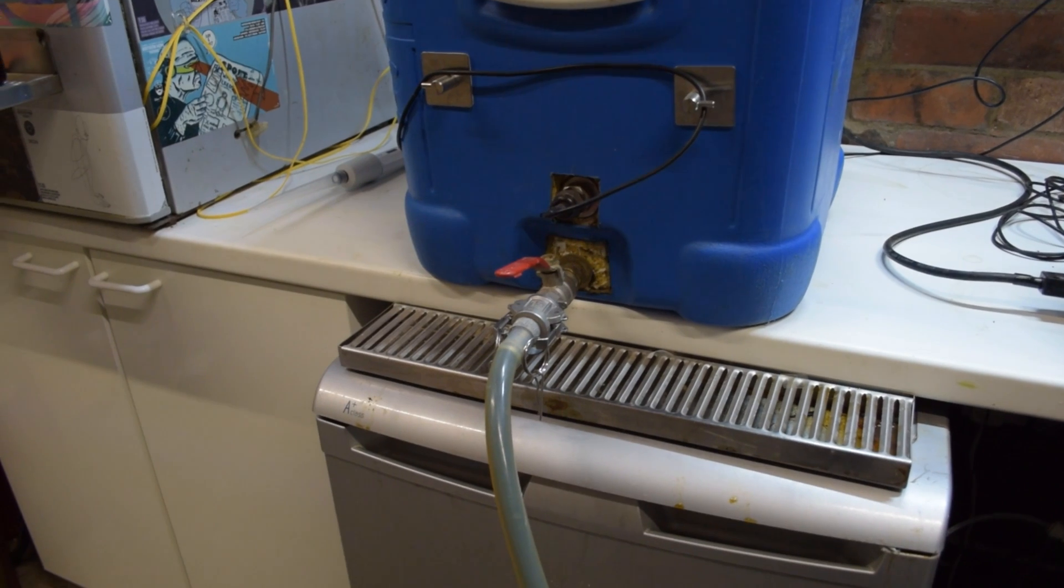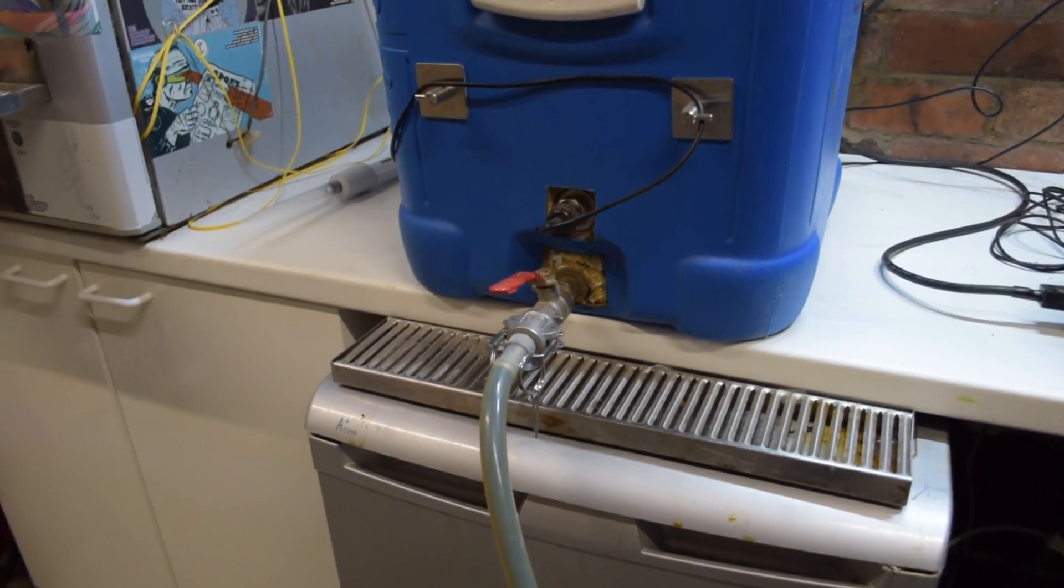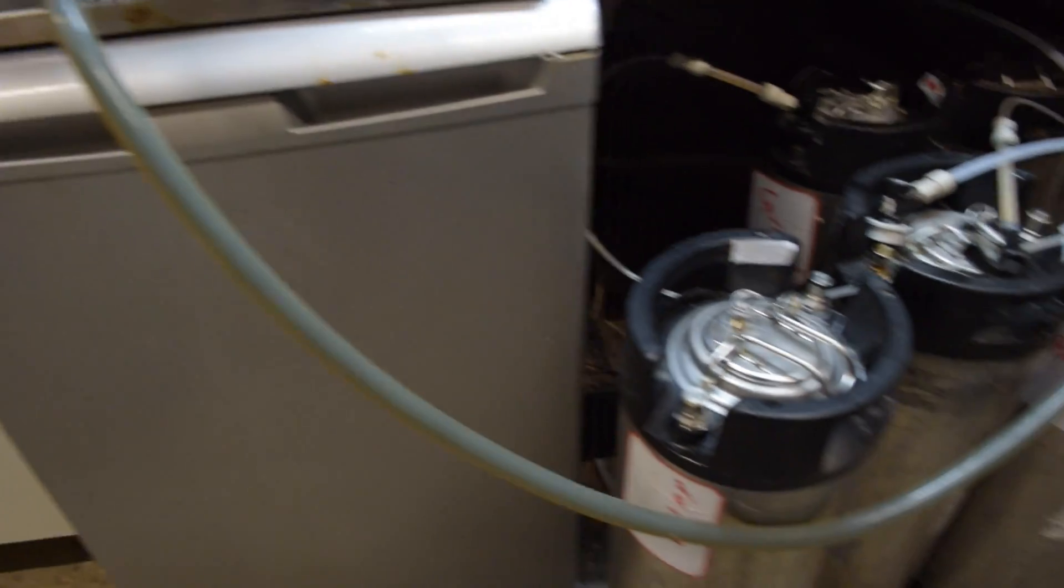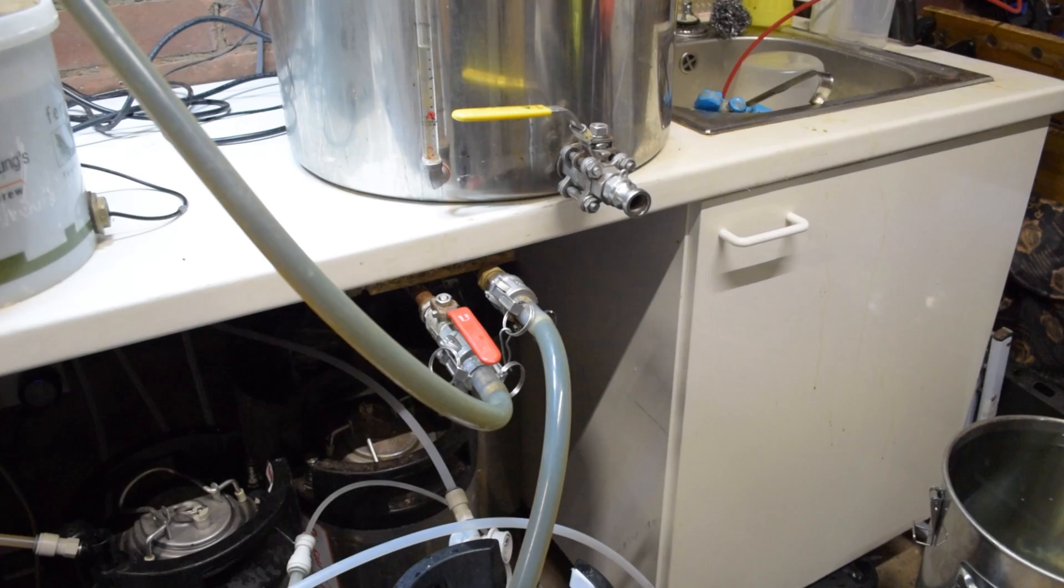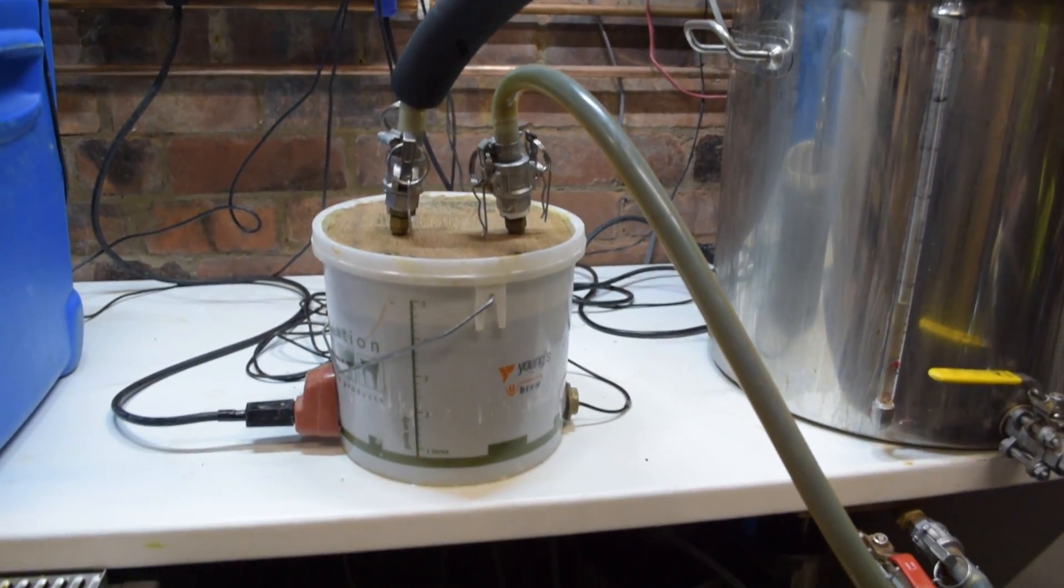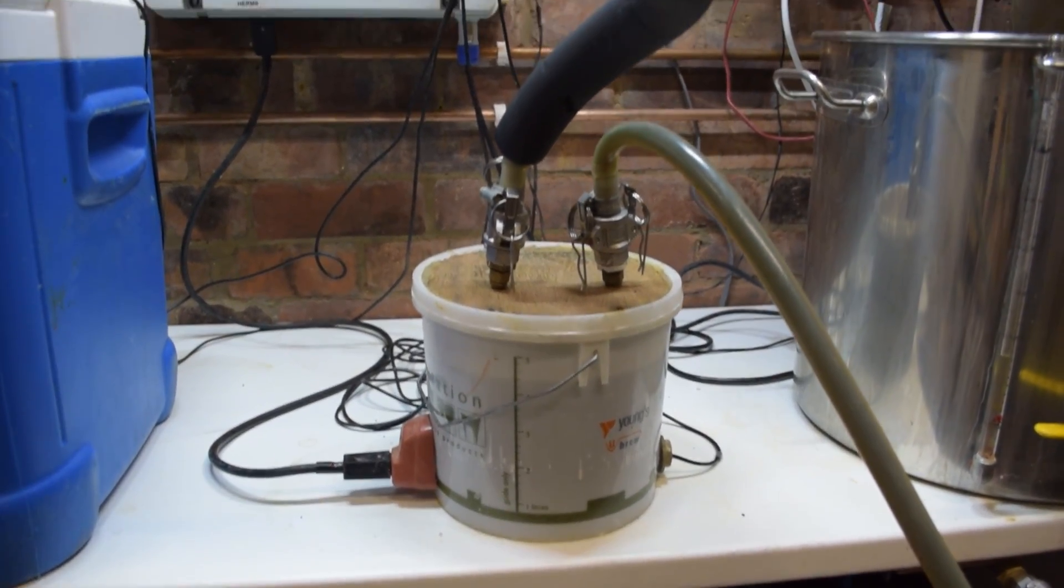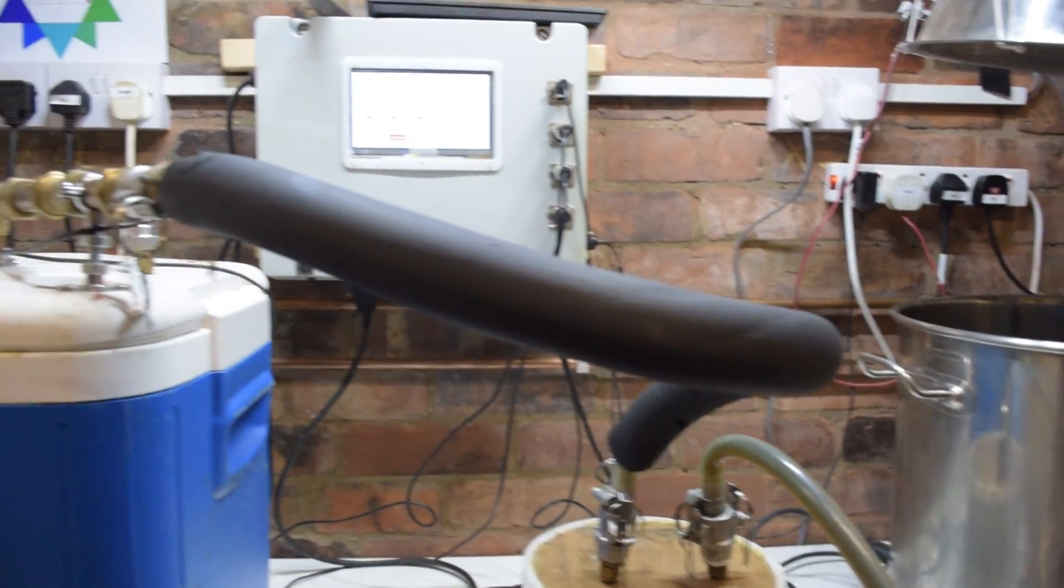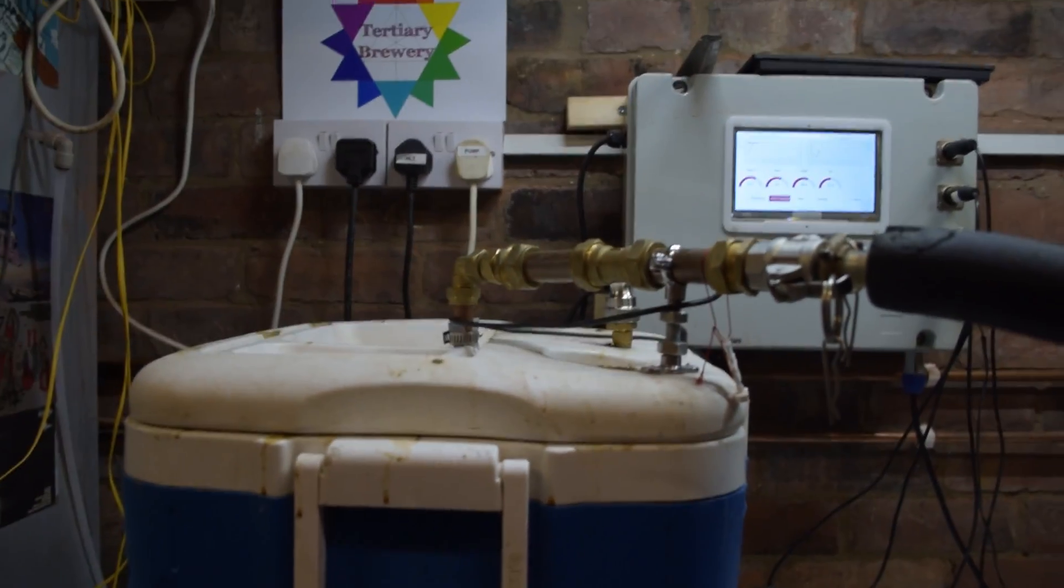So now I've reset the system up for mashing. The wort flows out of the mash tun here, around the long pipe again, this time into the pump where it pumps up here through the Herms tank in a coil, and then up through this insulated pipe and then back into the mash tun.